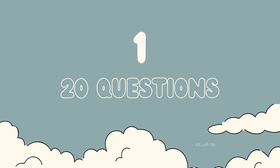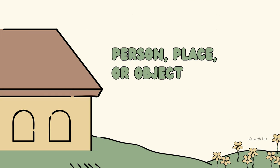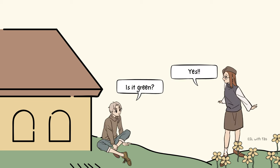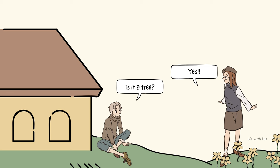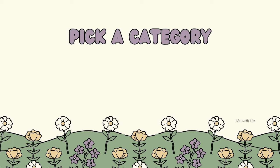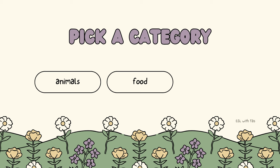Our first activity is 20 Questions. Think of a person, place, or object — the student will ask up to 20 yes/no questions to guess what you're thinking of. You can only respond with yes, no, or I don't know. After the student guesses correctly, I always like to switch roles. Sometimes I tend to limit the topic to a specific category like animals, food, or celebrities to make it more focused.